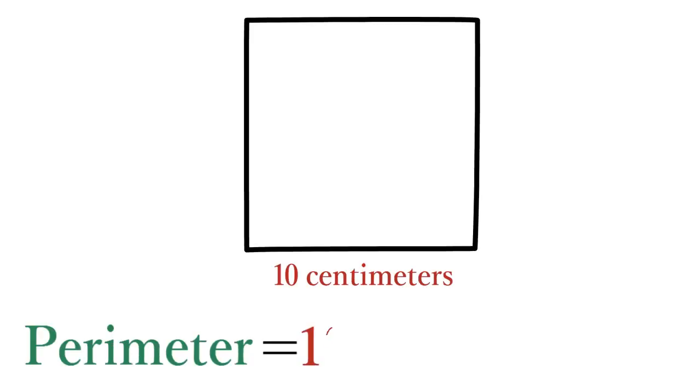And if a square has a side of length 10 centimeters, its perimeter equals 10 centimeters times 4, which is 40 centimeters.